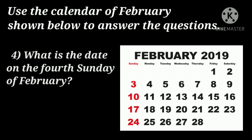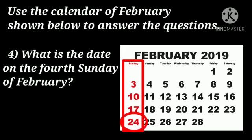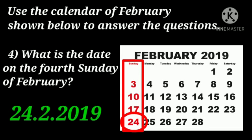Now let's move on to question number four: what is the date on the fourth Sunday of February? We have to find the fourth Sunday, so first we will search the Sunday column and find the fourth Sunday. The date on the fourth Sunday is 24-2-2019, which means 24th February 2019.